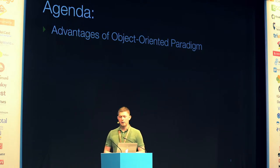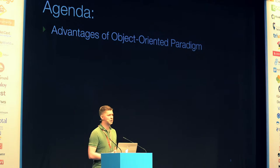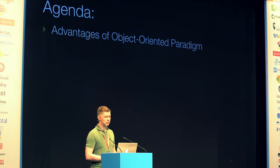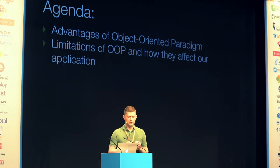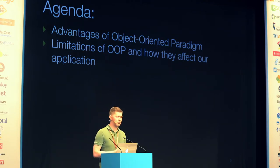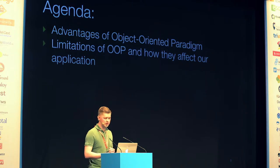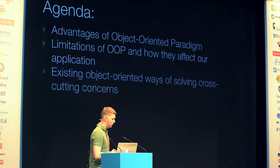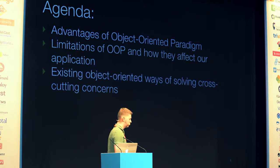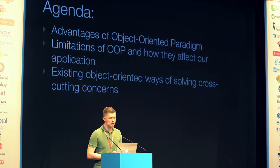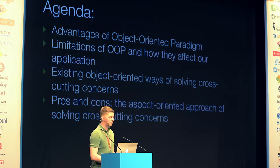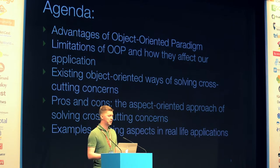First of all, I want to cover advantages of the object-oriented paradigm, why it's so popular nowadays, because we always use OOP and create great frameworks like Symfony, Laravel, whatever. The next point will be why OOP has limitations, and how can we use or try to avoid them to improve our application. I will show you how to fight with cross-cutting concerns — for example, how to extract logging, caching, or authorization control. I will also show you how the aspect-oriented approach can solve cross-cutting concerns and show some examples.